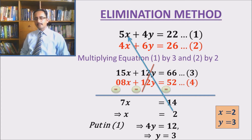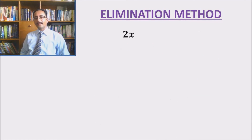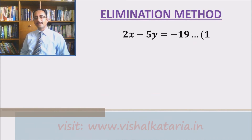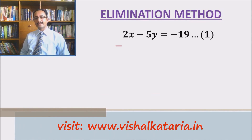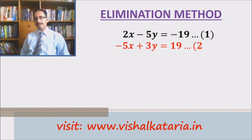Let's take one more example and solve it with the same method — the method of elimination. The example is: 2x minus 5y equals to minus 19 and minus 5x plus 3y equals to 19.